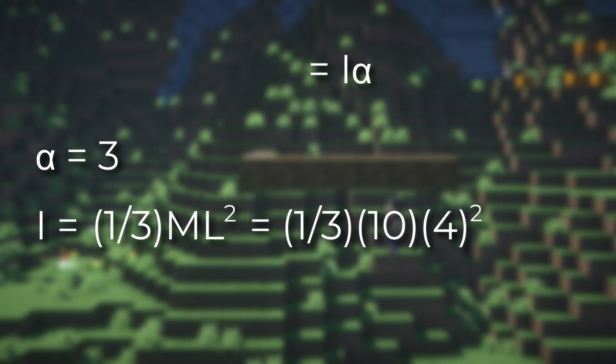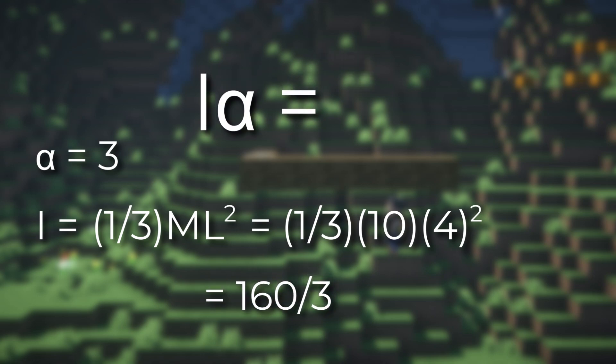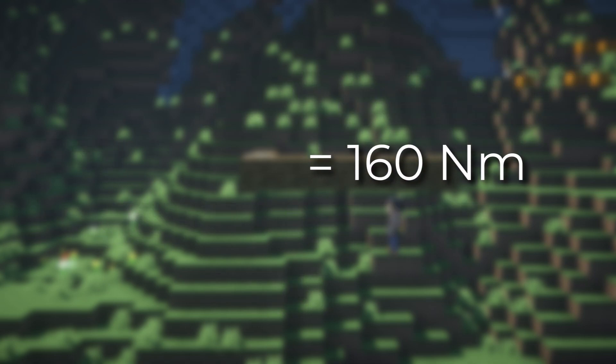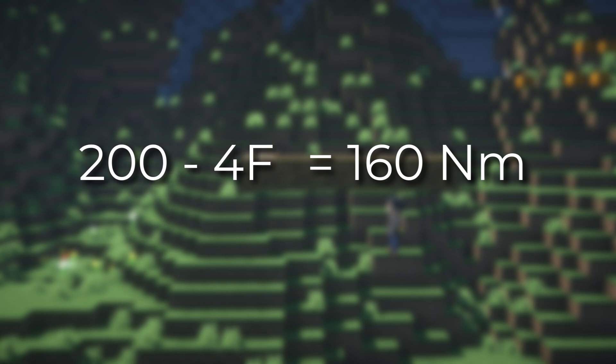m is 10 while the length is 4, so this gives us 160 divided by 3, then multiplied by 3 from the alpha. So the net torque equals 160 newton meters, which also equals 200 minus 4f from before. Some simple algebra will tell you f equals 10 — that is the amount of force I'm exerting.